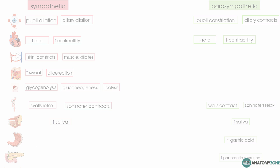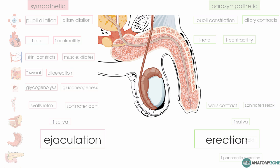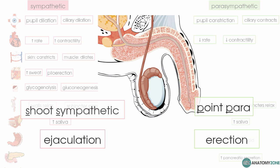In terms of the male genitalia, the sympathetic nervous system is responsible for ejaculation whereas the parasympathetic nervous system causes erection. There's a simple mnemonic for remembering that: point and shoot. Point — parasympathetic causes erection; shoot — sympathetic causes ejaculation. That's an easy way of remembering those two functions.